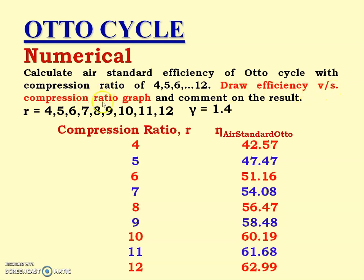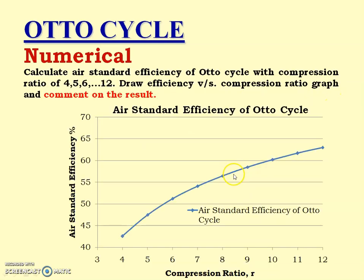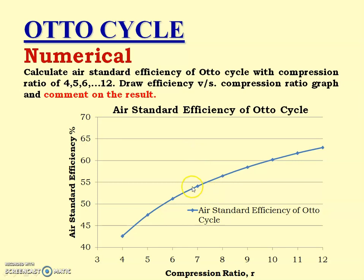Now we draw the efficiency versus compression ratio graph. You can look at the graph. As the compression ratio R increases, the air standard efficiency of the Otto cycle also increases. That is the comment on the result: as the compression ratio increases, efficiency of the Otto cycle also increases.